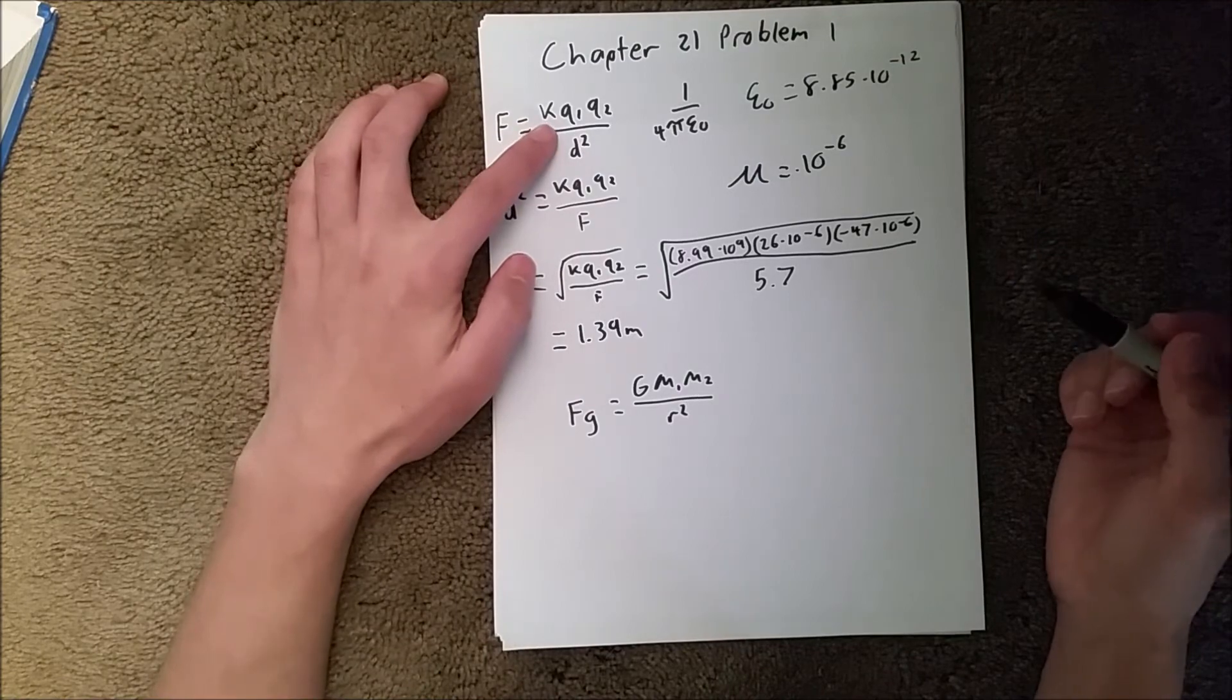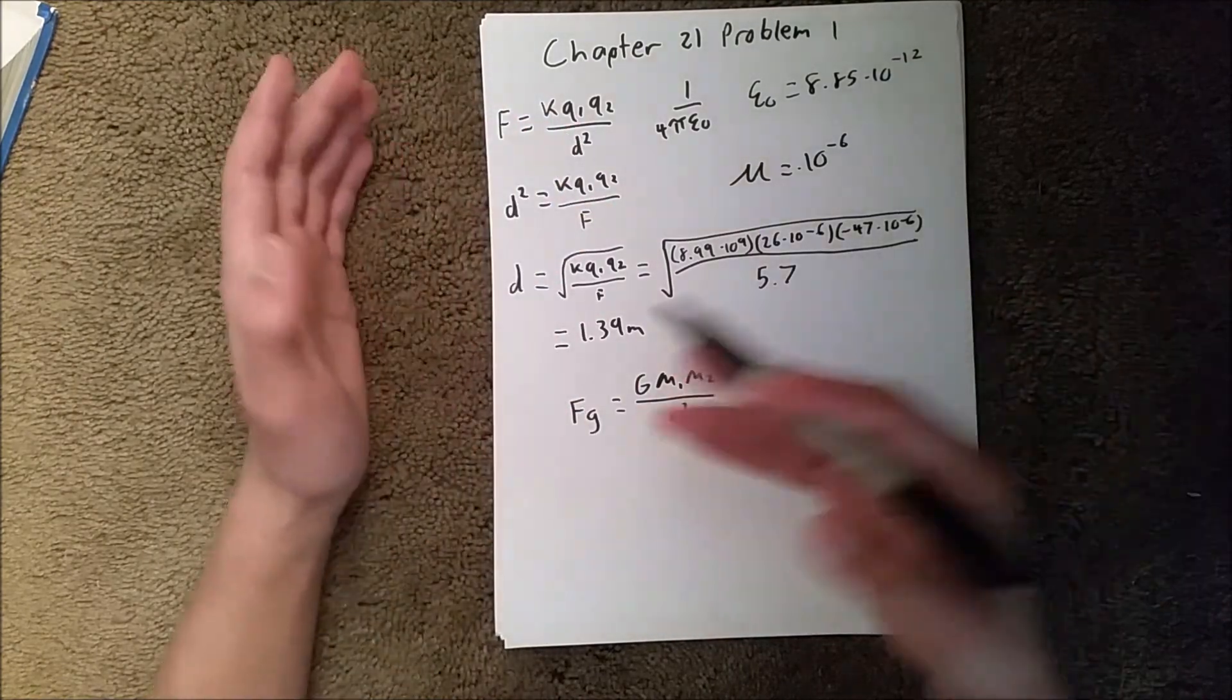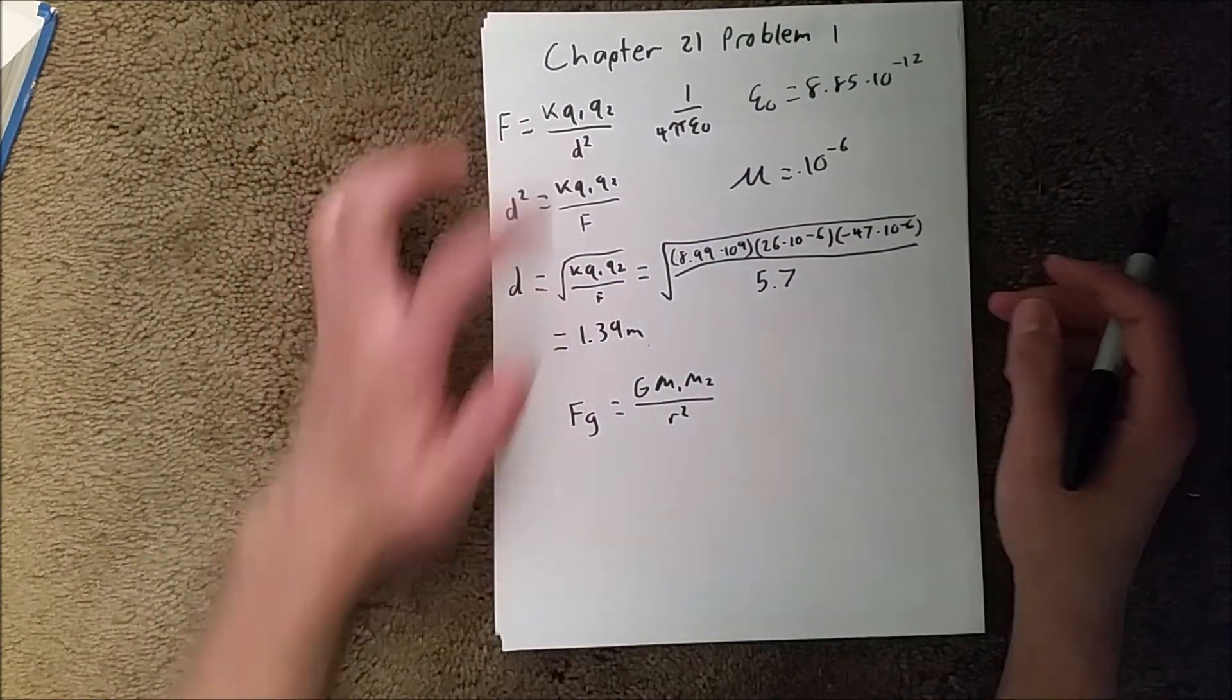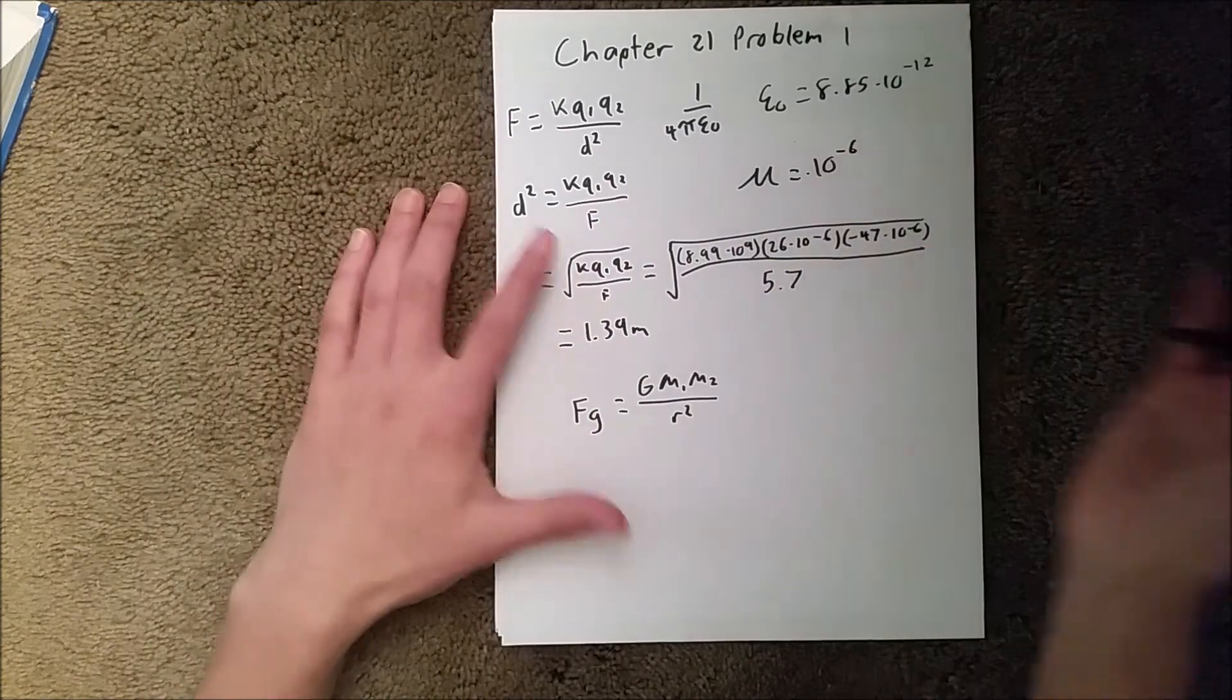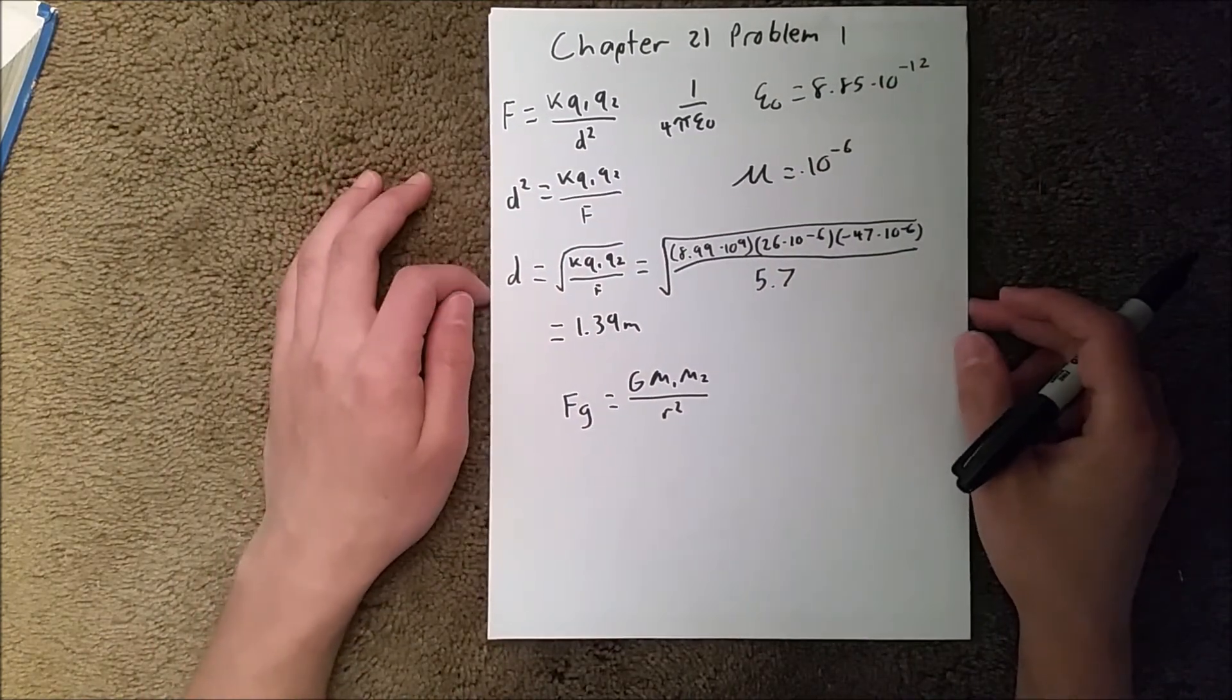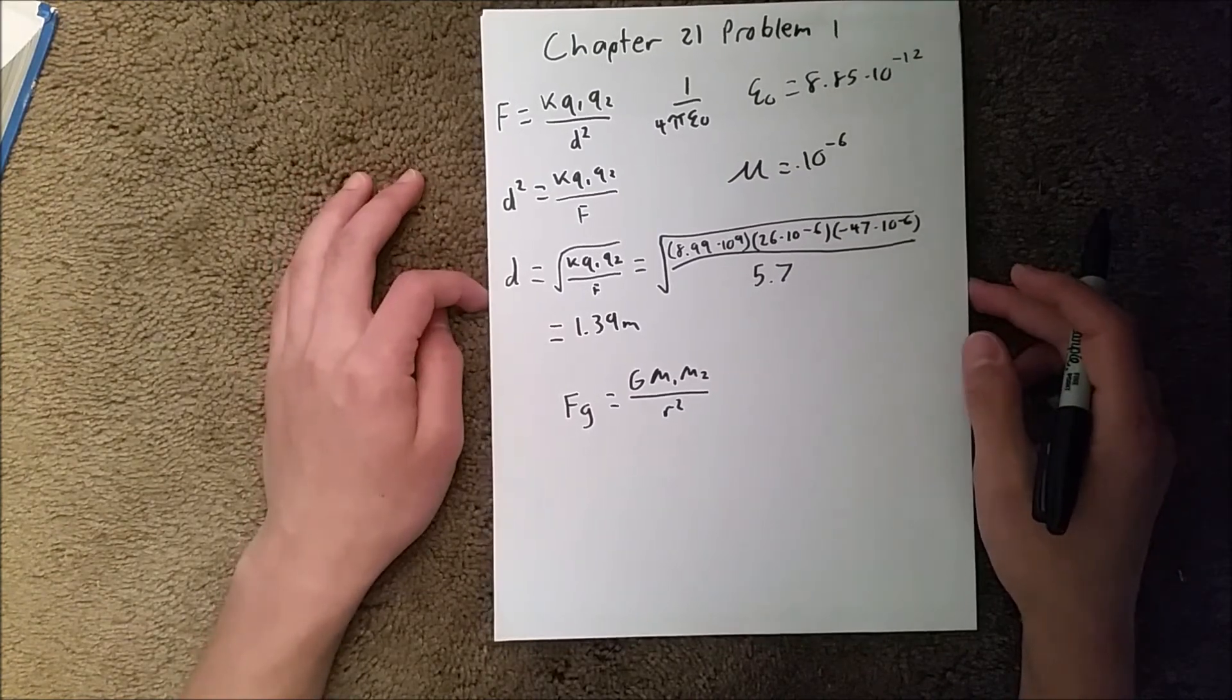As you can see here, this is pretty similar to what we have here because K is a constant and G is a constant. The two things that are attracting each other is the charges here versus the masses here, and the distance between them versus the radius between them. So you can see that they're pretty similar, and you'll notice within the chapter and other chapters that they are very similar to each other.